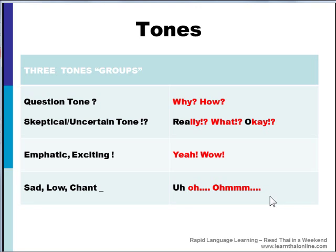So for instance, the number four in Thai is see. But if I said the same word with a question tone — see, can you see? — that actually changes the meaning of the word to color. So the way to say four colors, for instance, would be to change the tone in each case — see, see.